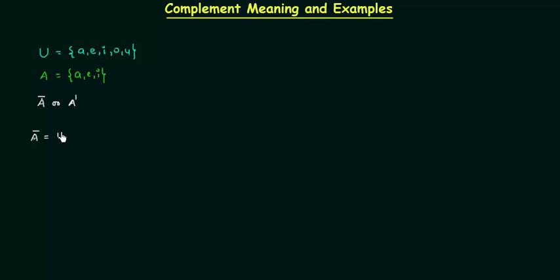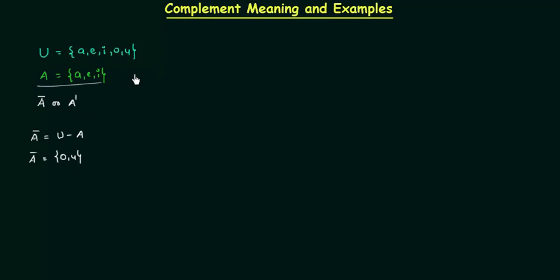The complement of A is equal to U minus A. U is the universal set having elements a, e, i, o, u and A is the set whose complement we want to find, with elements a, e, i. So the elements of A-complement are o and u. In complement, we include the elements which are not present in the set — o and u were not present in A, so we include o and u in A-complement.